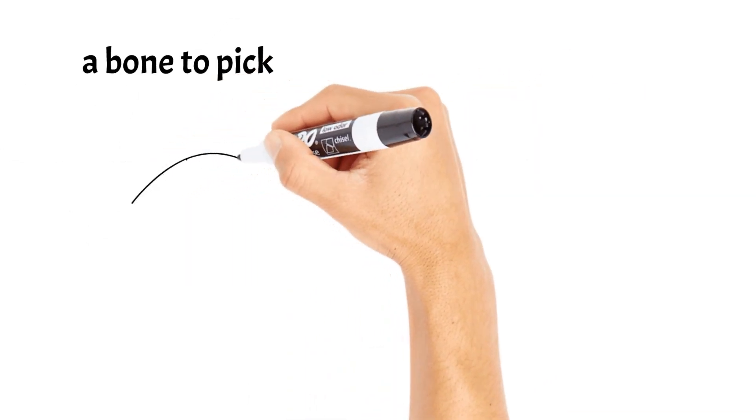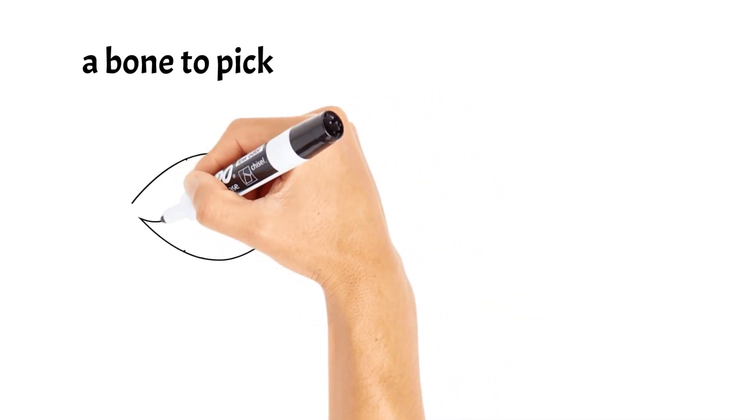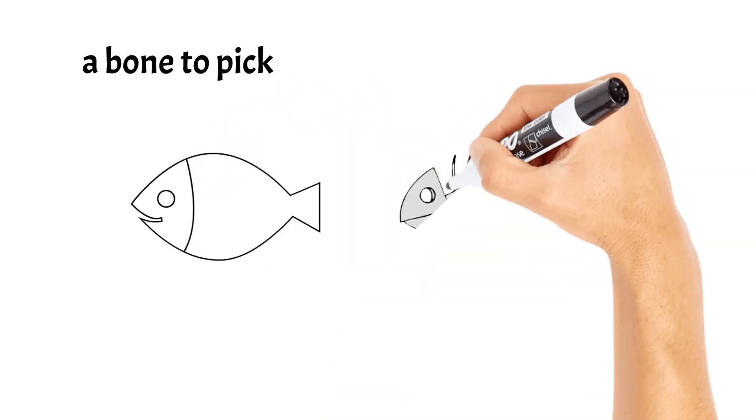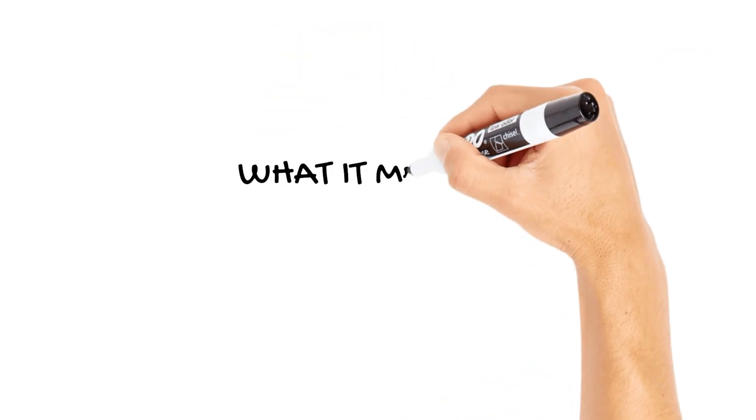Imagine a time when people ate meals with meat or fish. Sometimes they'd find tiny bones. These bones could be annoying if swallowed. So saying you had a bone to pick meant you had a problem or complaint, like picking out those bothersome bones from your food.